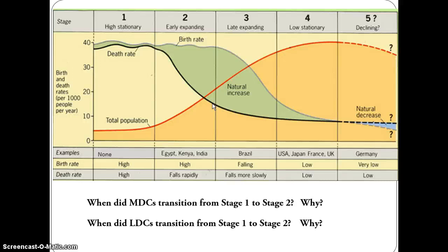Remember, the highest natural increase rate today is in Niger at about 3.8%, which is exceptionally high. On the Stage 5 side, there is a natural decrease rate where your CBR minus CDR actually equals a negative number.